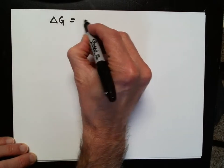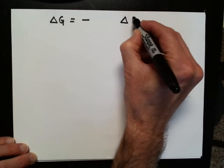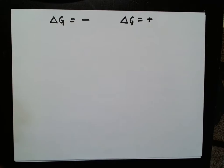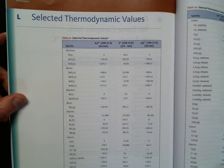That is going to be spontaneous if Delta G is negative, and it's going to be positive if the process is non-spontaneous. We know that we can look up values for Delta G using Appendix L in our textbook.